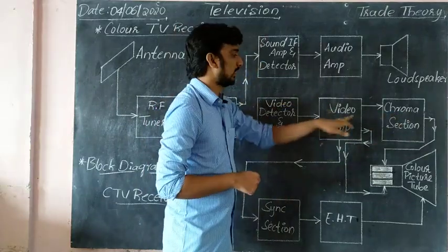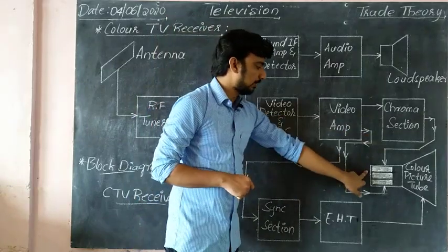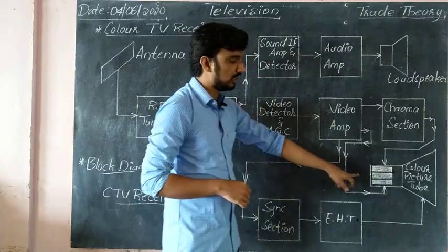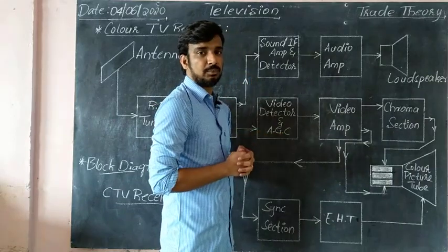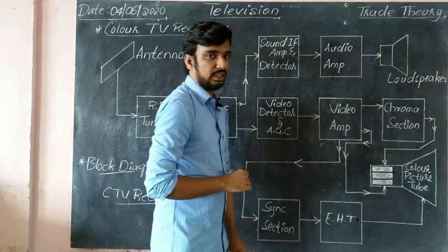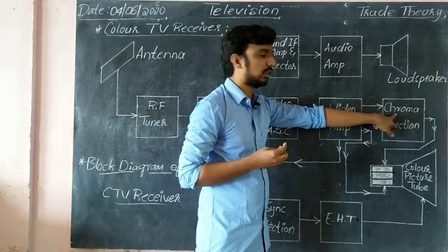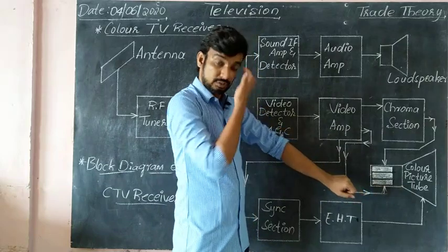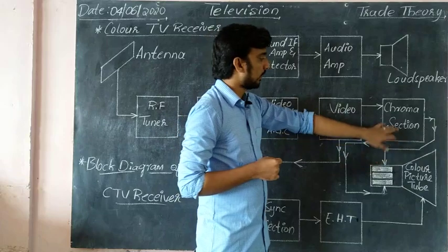One output is the chroma section, where color information is processed. The other output — what is this? It goes to the picture tube's control grid. The control grid is used to control picture brightness. We give the video amplifier output to the control grid, and the other output goes to the chroma section, which contains the color information.